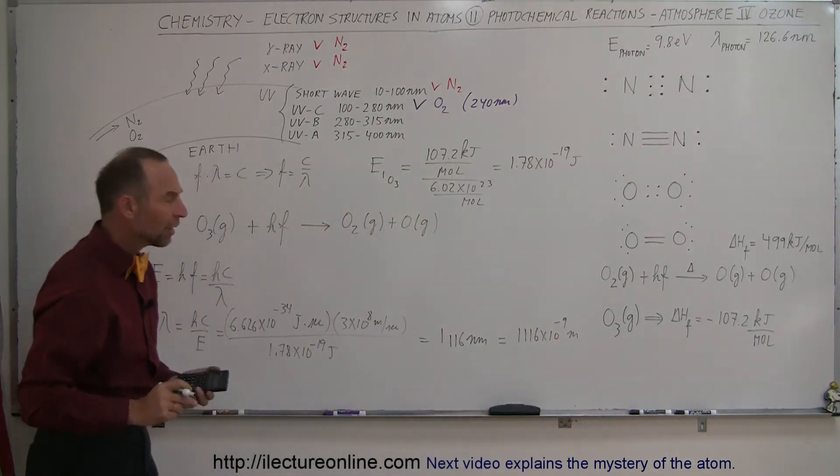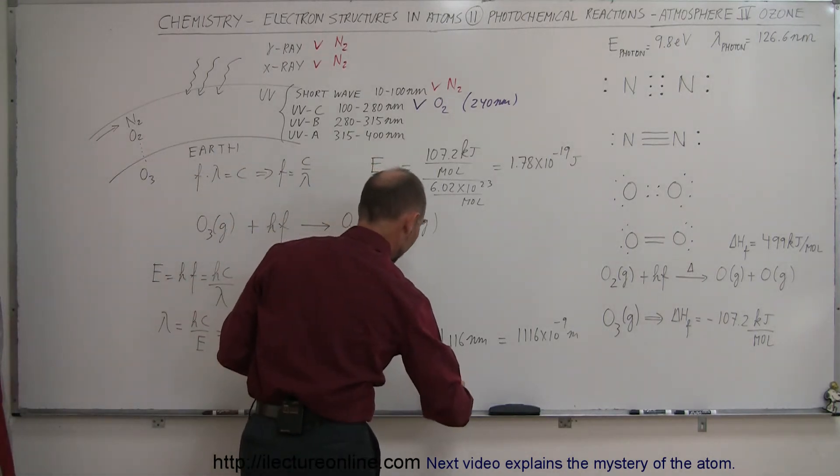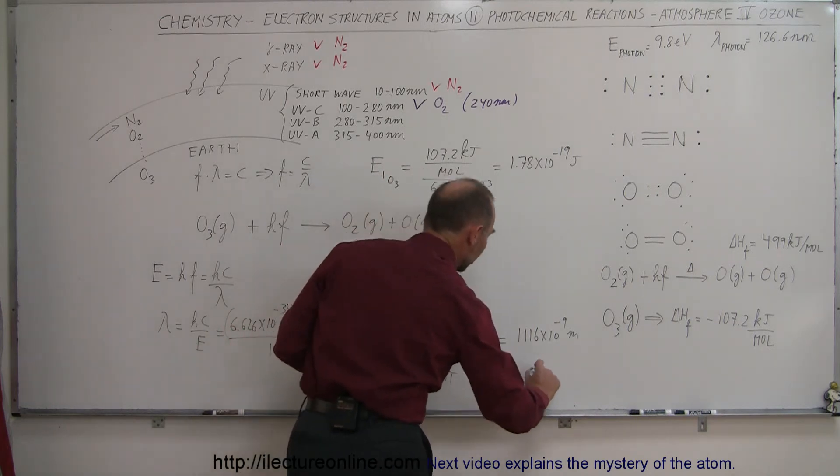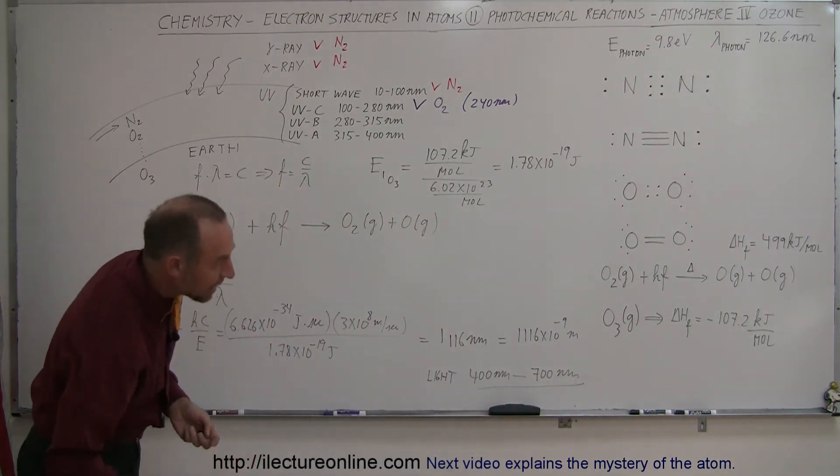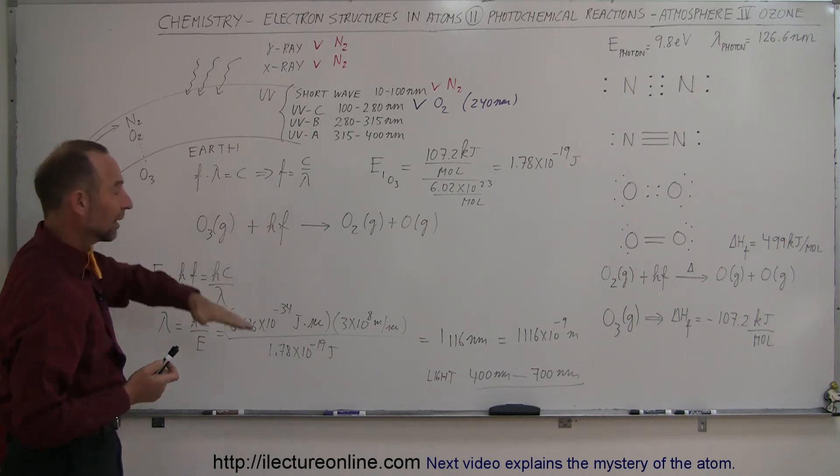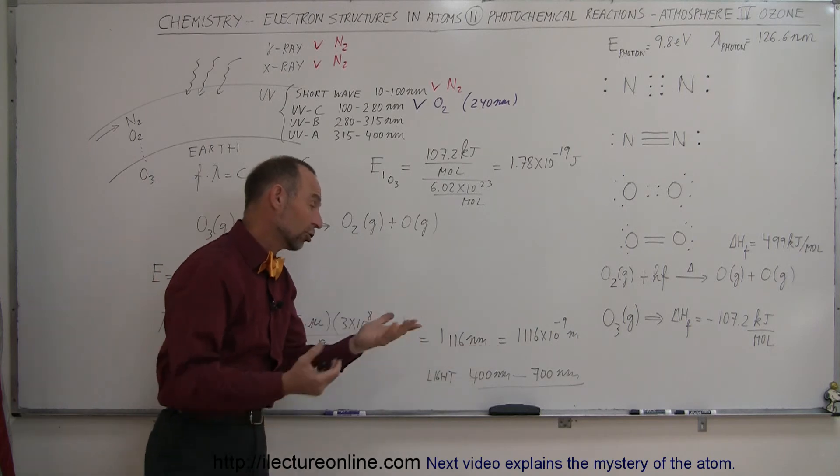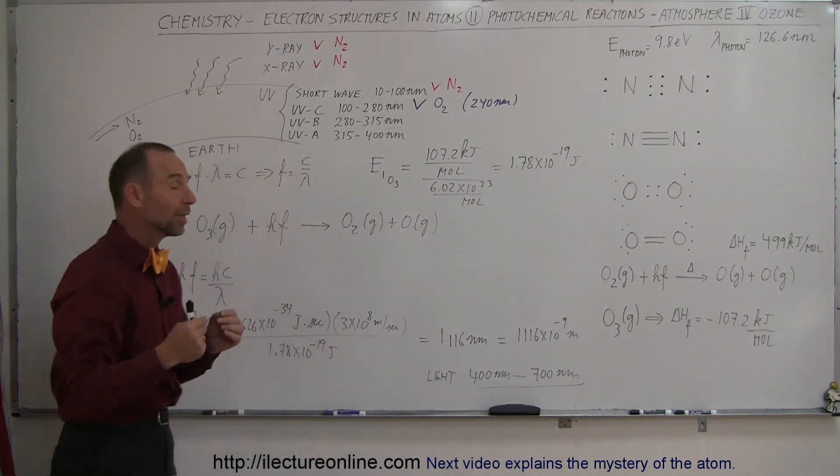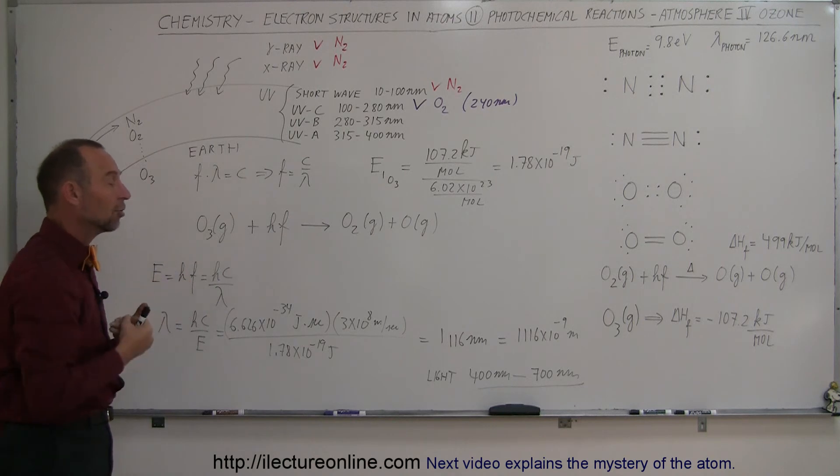That's not a very energetic photon, because visible light has wavelengths from 400 to 700 nanometers. This means that any photon coming in from space with a wavelength shorter than about 1,100 nanometers will be absorbed by the ozone layer, which will then dissociate and absorb that energy.